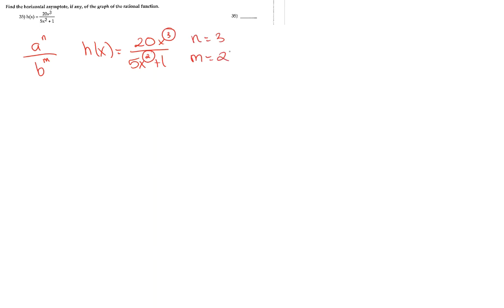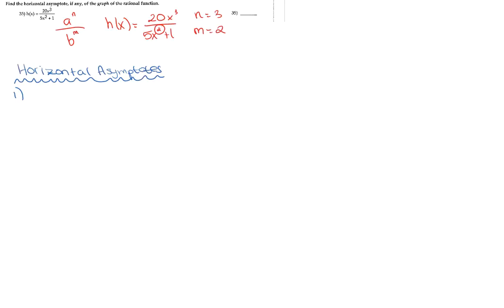Now let's determine the horizontal asymptote by recalling three cases. For case 1, if your n exponent is less than your m exponent, the horizontal asymptote is y is equal to 0.